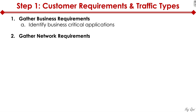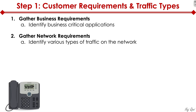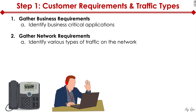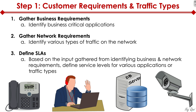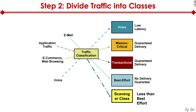You also gather network requirements, identifying various types of traffic on the network — traffic like voice over IP, video, database, and video surveillance. After gathering all those data points from your business and network audit and interviews, you use that information to define service levels for these different applications and traffic types. That leads to step two, where you divide that traffic into different classes.